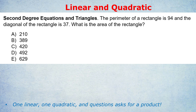The perimeter of a rectangle is 94 — that's a linear equation, because you add up the four sides and it equals 94, no squaring involved. And the diagonal of the rectangle is 37 — that's a quadratic equation, because the diagonal you get via Pythagoras: x squared plus y squared equals 37 squared. And the question is: what is the area of the rectangle? The area is x times y. Notice again, they're asking for the product of x times y — that's the hint to use this method. The other hint is that we have one linear and one quadratic equation.